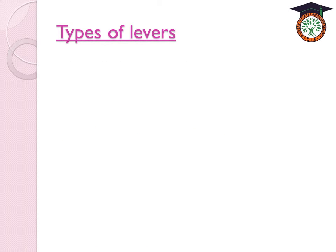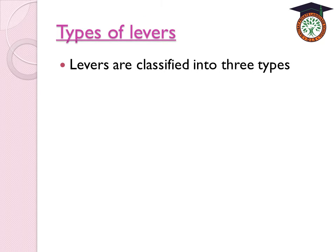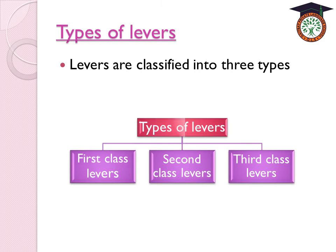Now let's talk about the types of levers. Levers are classified into three types: first-class levers, second-class levers, and third-class levers. The difference between them is the position of the fulcrum, the resistance force, and the effort force.